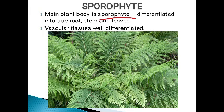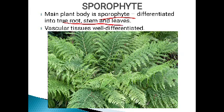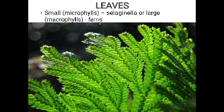The main plant body in pteridophytes is the sporophyte, so the sporophytic generation forms the dominant phase. In bryophytes, the gametophytic generation is the main plant body. This sporophyte has well-differentiated true root, stem, and leaves, and its vascular tissues — xylem and phloem — are also well differentiated.